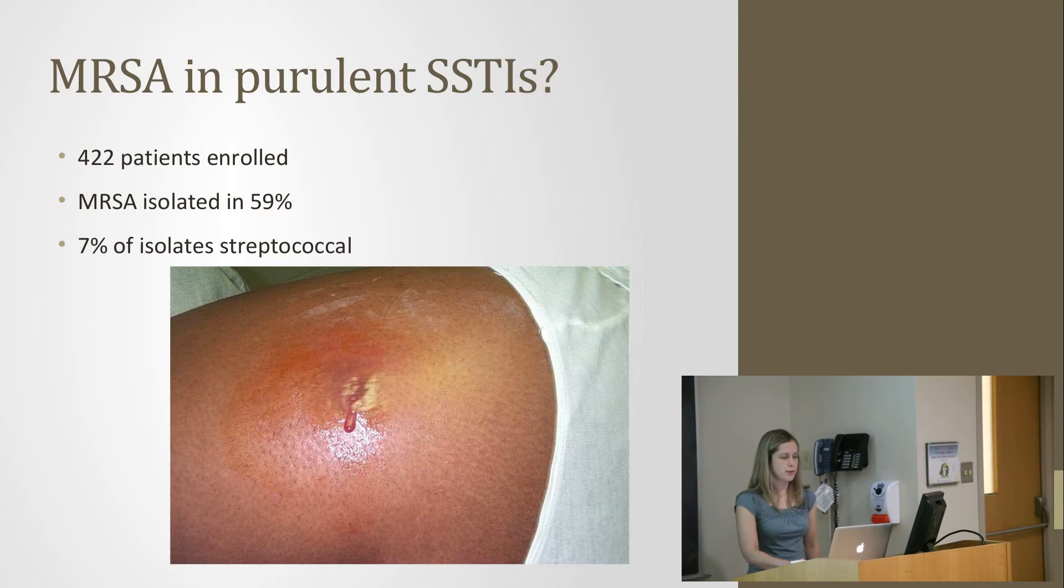422 patients were enrolled. MRSA was isolated in 59% of their wound cultures, which is pretty high. Only 7% of the isolates were streptococcal. Interestingly, only 27% of patients who came back positive for MRSA in their wounds had risk factors for hospital-acquired MRSA. That was a clinical diagnosis - these people had the absence of hospital admission in the past year, or being on dialysis, or indwelling Foley, and other things you'd associate with hospital-acquired MRSA. 99% of the MRSA strains when they did genotyping were characteristic of community-acquired strains.